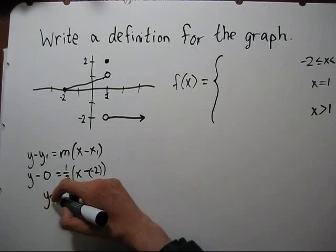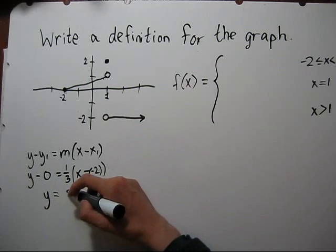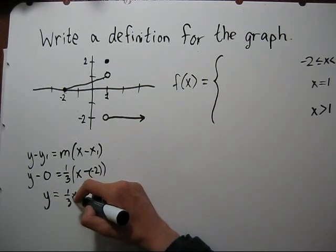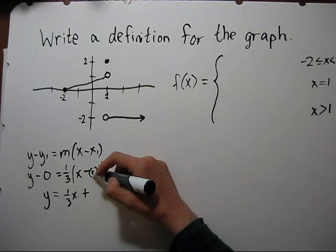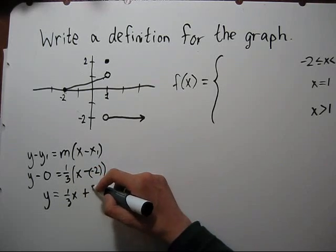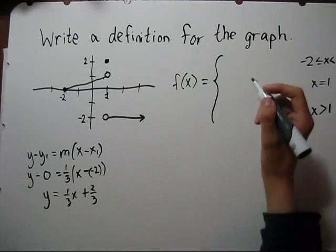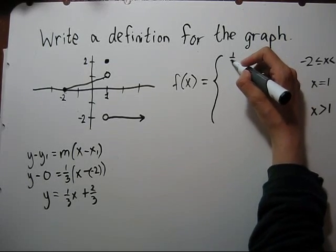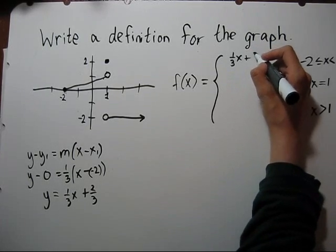So this simplifies to be y equals 1 third x plus, this becomes plus, and times 1 third, so it's 2 thirds. So right here for our formula, we'll write 1 third x plus 2 thirds.